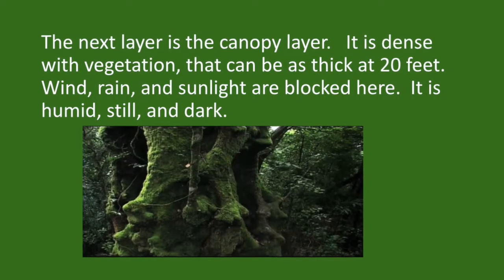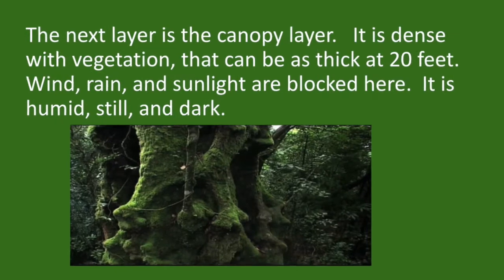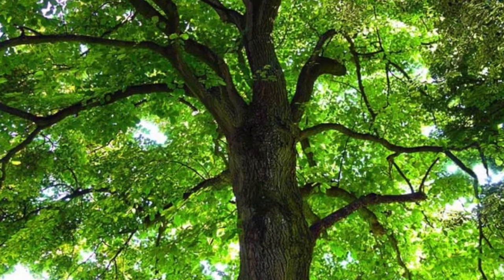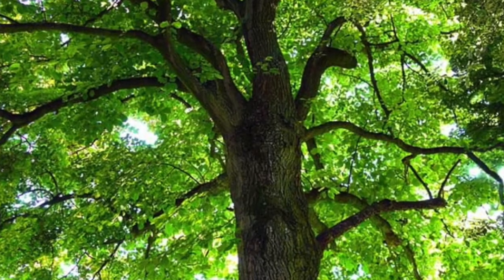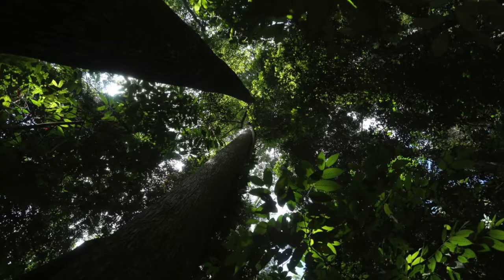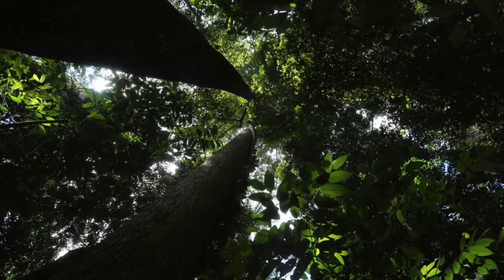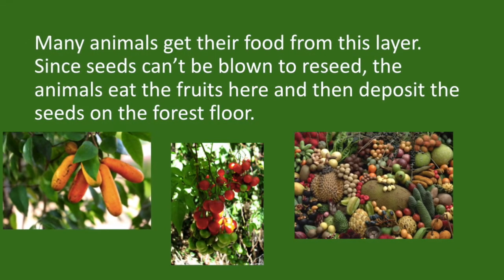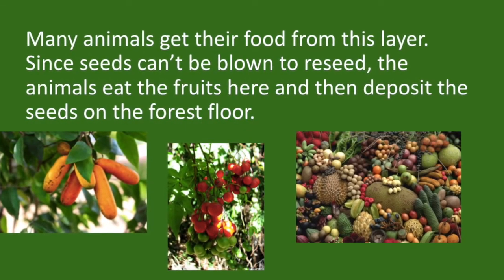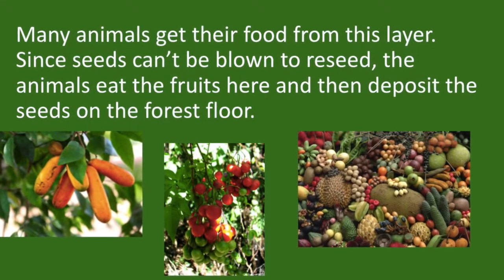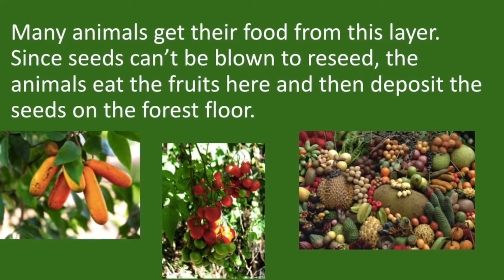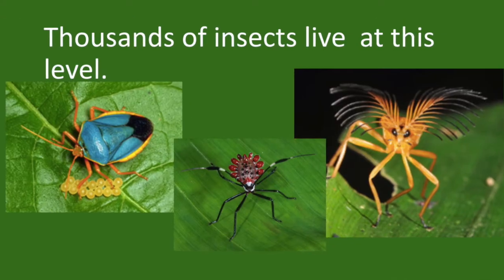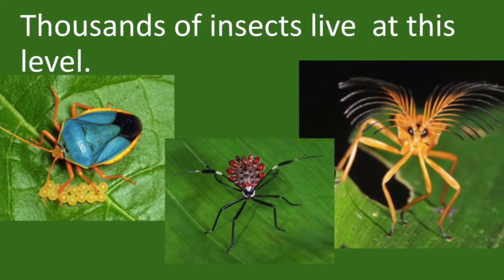The next layer is the canopy layer. It is dense with vegetation that can be as thick as 20 feet. Wind, rain, and sunlight are blocked here. It is humid, still, and dark. Many animals get their food from this layer. Since seeds can't be blown to reseed, the animals eat the fruits here and then deposit the seeds on the forest floor. Thousands of insects live at this level.